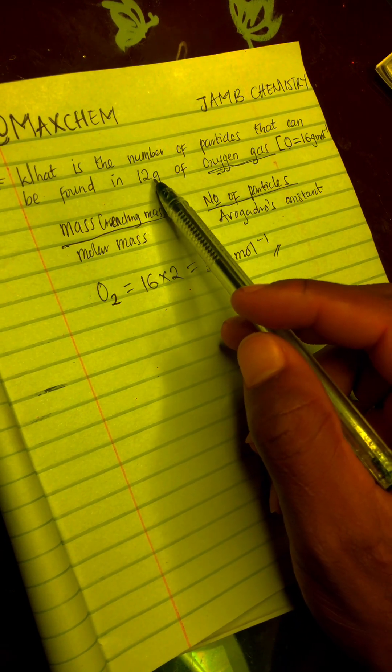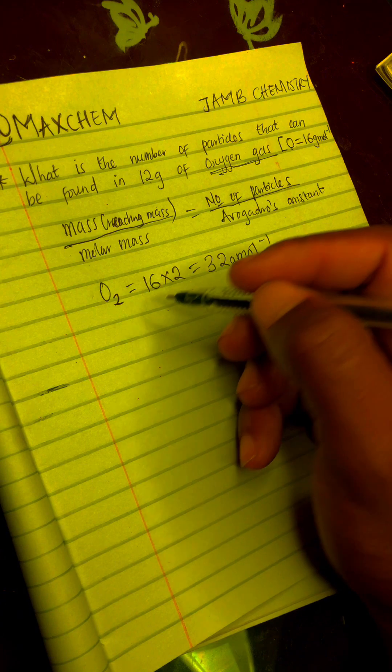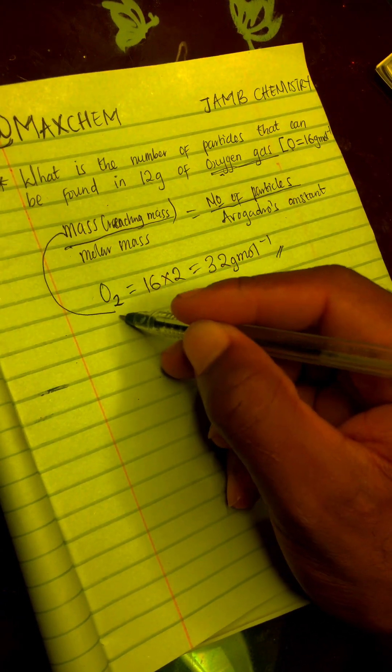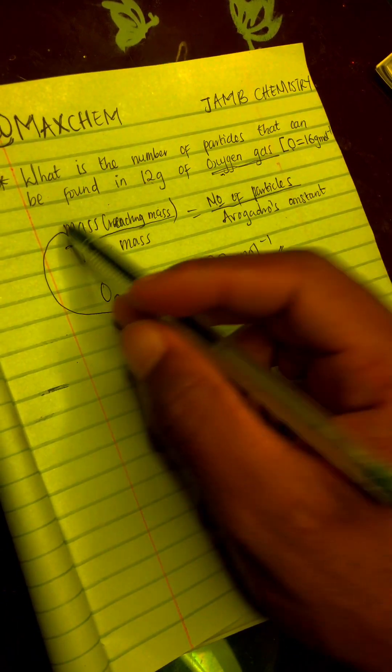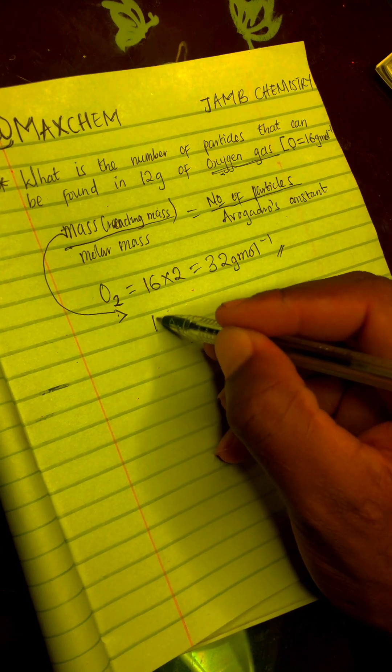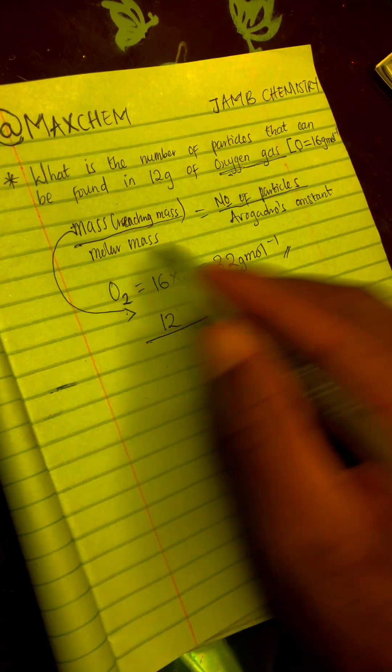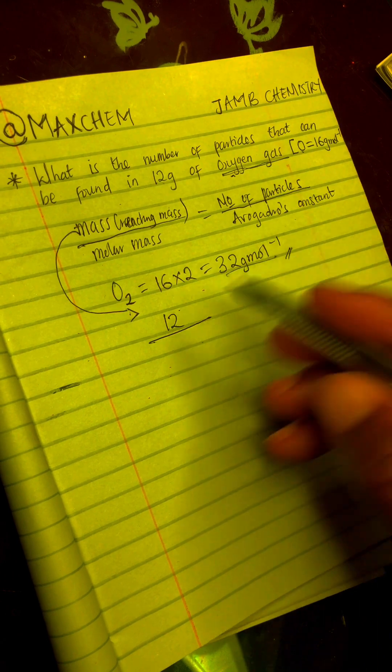What is the mass? The mass is 12 grams. We are going to be putting this in what we are going to be solving. The mass is 12 grams. 12 over, what is the molar mass? That is what we got here, 32.